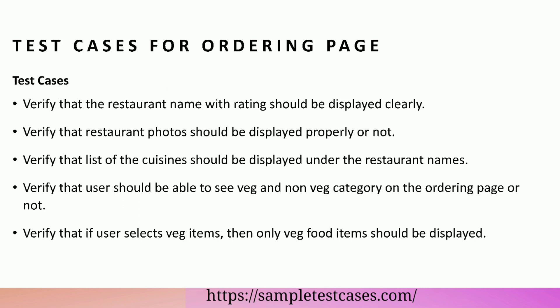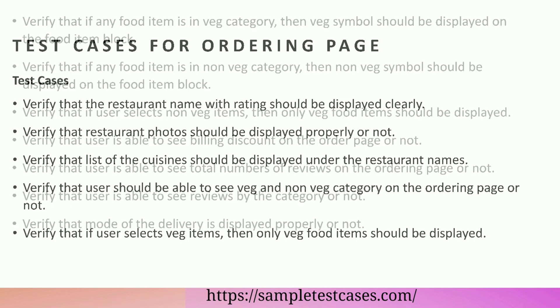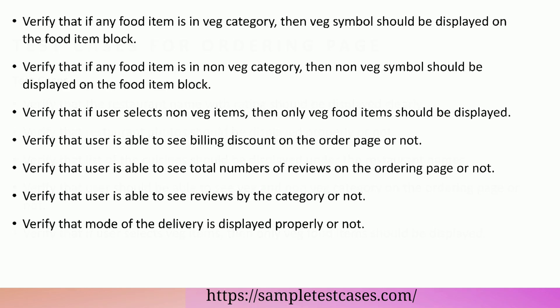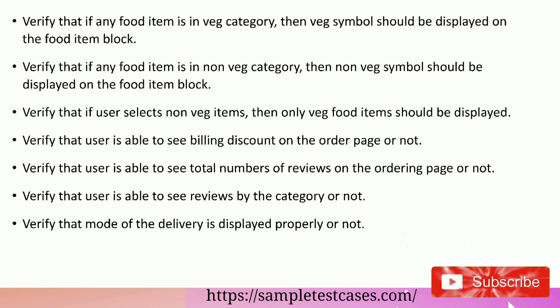Verify that if user selects veg items, then only veg food items should be displayed. Verify that if any food item is in veg category, then veg symbol should be displayed on the food item block. Verify that if any food item is a non-veg category, then non-veg symbol should be displayed on the food item block.